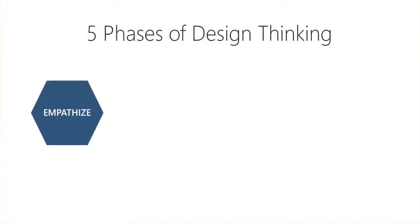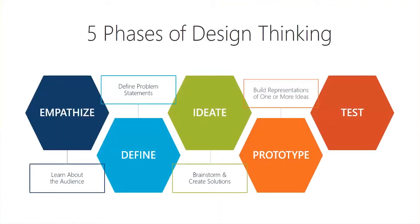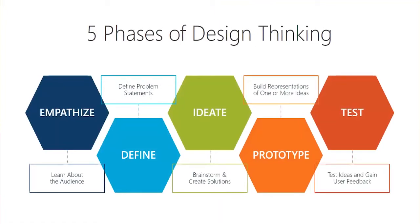Design thinking has five phases: empathy, define, ideate, prototype, and test. Empathy is where we learn about the audience — we start here, not with defining the problem. Once we take the time to learn about our end users and practice empathy research, we take all of that data and define the problem statement. Then we ideate — we brainstorm and come up with as many ideas as we can, narrow those ideas down, build quick representations in the prototype phase, and then test our ideas and get user feedback.